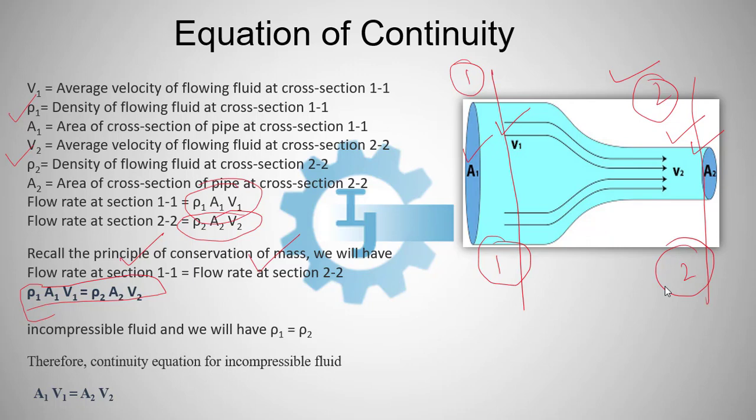If the fluid is incompressible, then what will happen? We know in case of incompressible fluid, the density is constant, that is, rho is constant. So, rho 1 will be equal to rho 2.